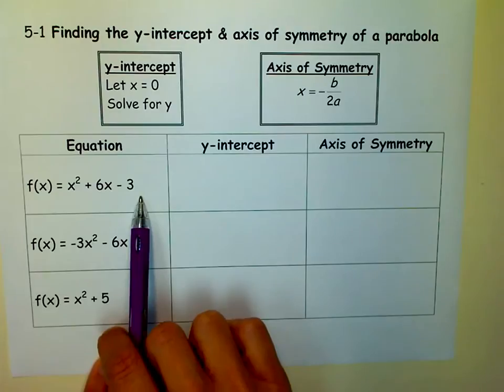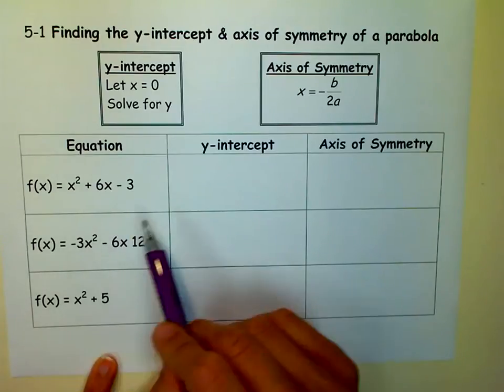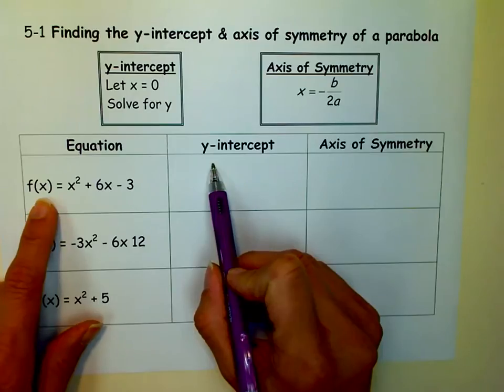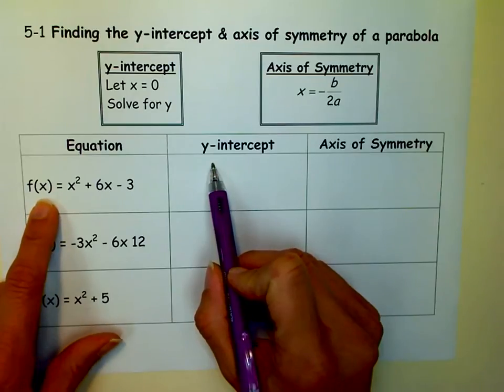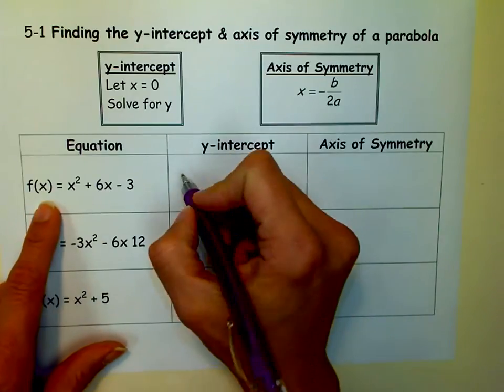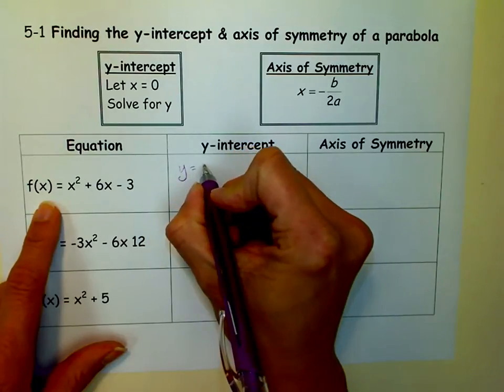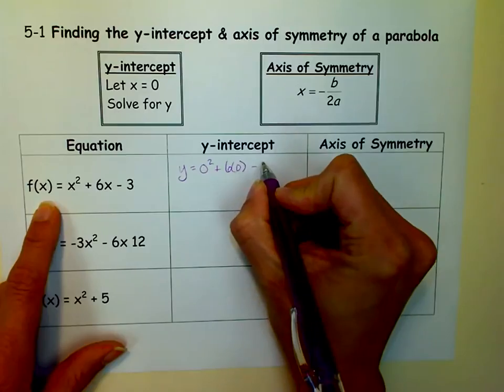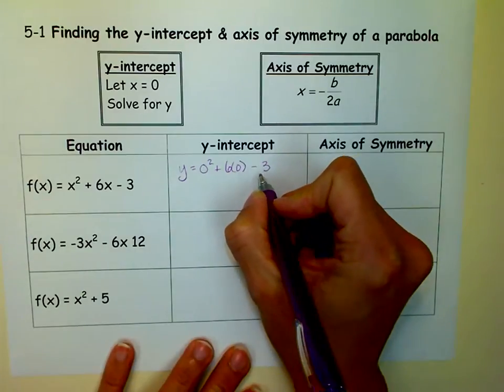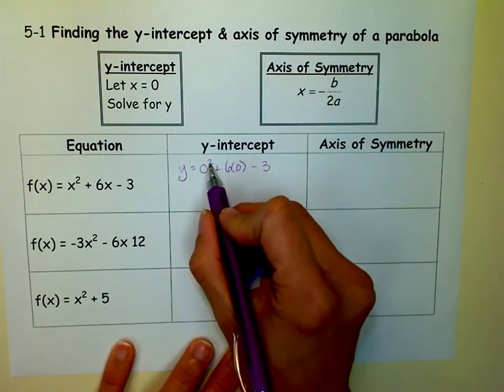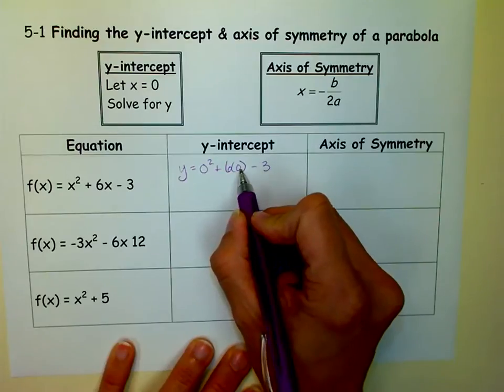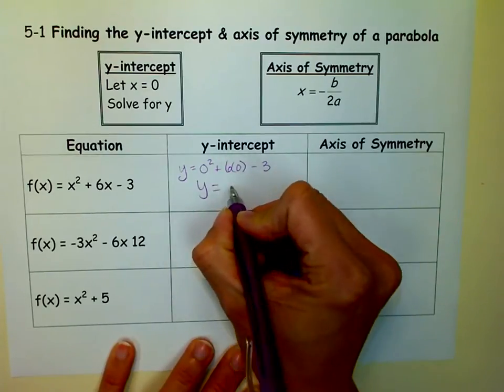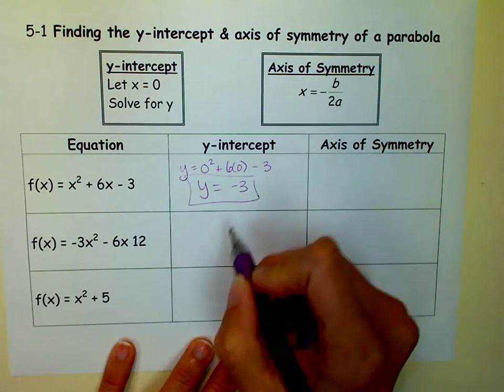There's no c in this one. That's for later. Okay, so remember, f of x is just y in disguise, and whenever we find the y-intercept, we let x equal 0 and solve for y. So I'm going to rewrite this equation, but this time I'm going to put a 0 in for x, because when I do that, I'm finding my y-intercept. So 0-squared is 0, 6 times 0 is 0, so 0 plus 0 minus 3 is negative 3. So my y-intercept is negative 3.